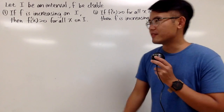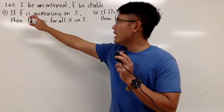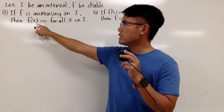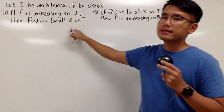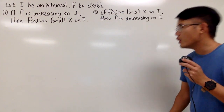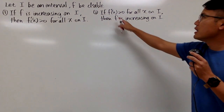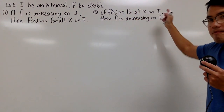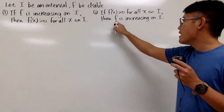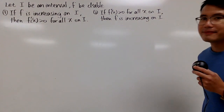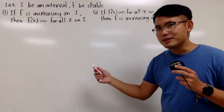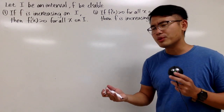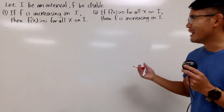We have two statements. The first one says: if f is increasing on the interval I, then we must have the first derivative being positive for all x on I. And secondly, if the first derivative is always positive for all x on I, then f has to be increasing on that interval I. Are these two statements both true? Or maybe just one of them is true? Or maybe are they both false?